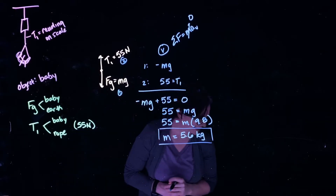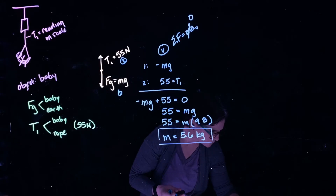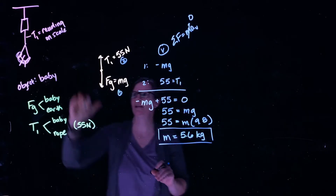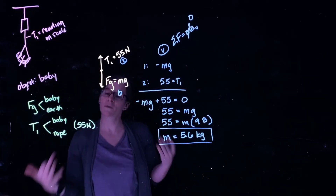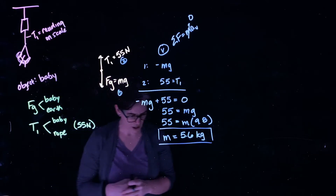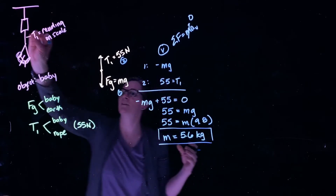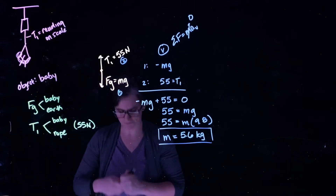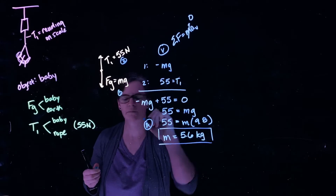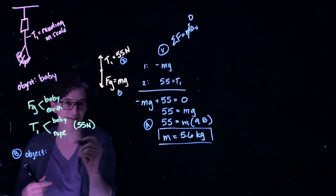Part B asks: what is the tension in the cord attaching the baby to the scale? We've already talked about that—that tension is the reading on the scale itself. We could consider the object being that rope. For Part B, we consider the object being the rope.